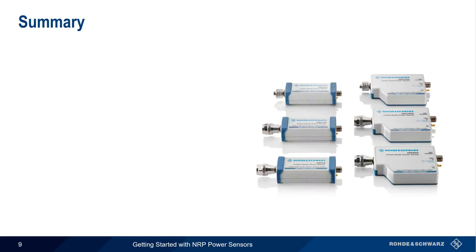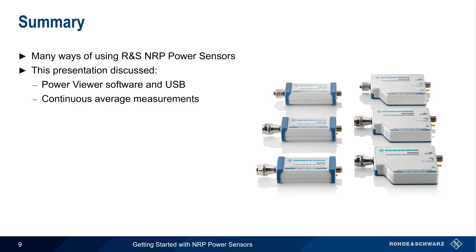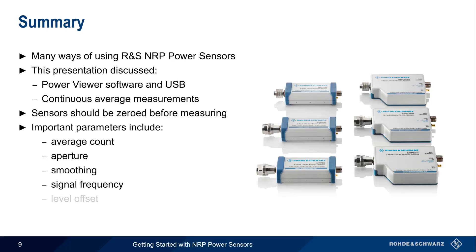Let's end with a brief summary. There are many ways to use Rohde & Schwarz NRP Series power sensors, and in this presentation we covered using the Power Viewer software and a USB connection to make continuous average power measurements. We also discussed how and why power sensors should be zeroed before making measurements. And although these measurements usually require very little configuration, there are some other parameters you may want to adjust, such as average count, aperture, smoothing, signal frequency, and level offset.